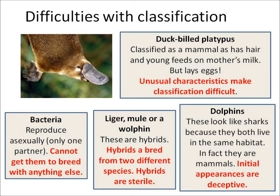Now we've got hybrid animals like ligers, mules, or wholphins. They are bred from two different species together, and they're sterile. Because it's sort of two different species, which species do we put it in? We don't. So that's a problem with classification.